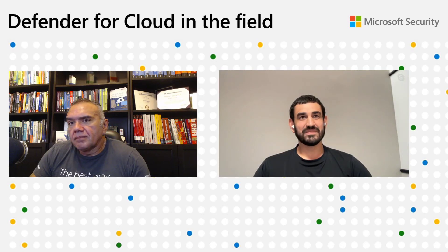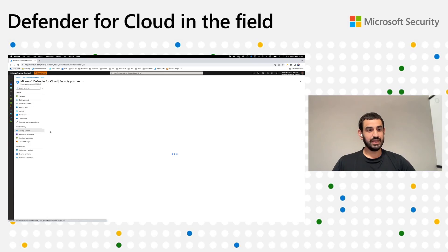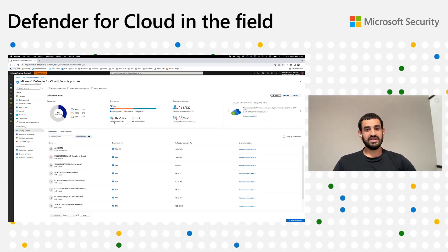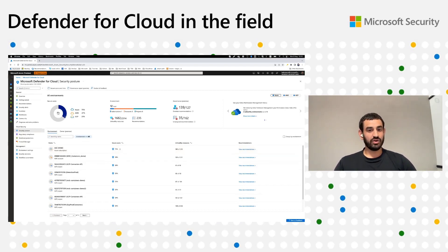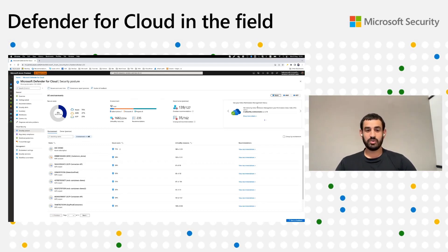Here's the MDC portal. I'll start with the Security Posture blade. Here you can see the whole security posture of the organization by subscription, account, or project. You can see the Secure Score, the number of unhealthy resources out of the total resources. You can click to see only the recommendations of a particular environment, and also see an aggregated summary for your organization. As part of the integration with Entra Permissions Management, we've added a new tile presenting the number of unhealthy environments out of the total connected environments.